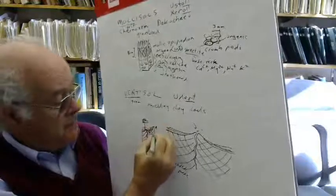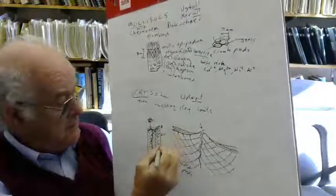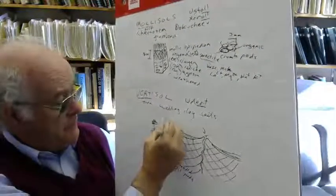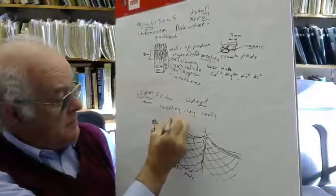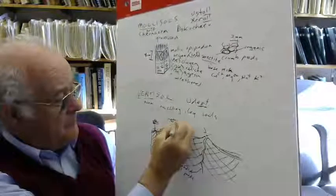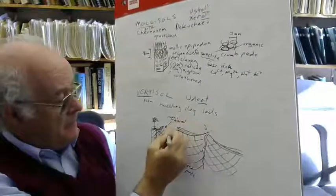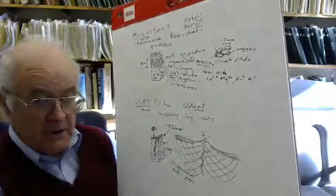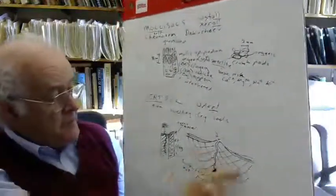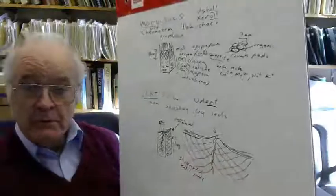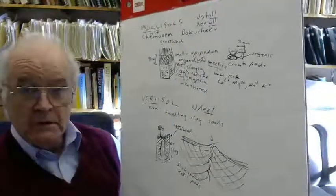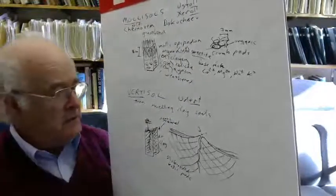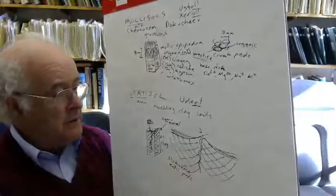Vertisols have an A horizon, a BT horizon, and a C horizon. This is organic plus mineral. The BT is a really thick clay. This kind of structure — the clastic dikes and slickensides — is beautifully preserved in the fossil record. We can see these things in cliffs. There's a classic example 2.2 billion years old in South Africa showing these various features.